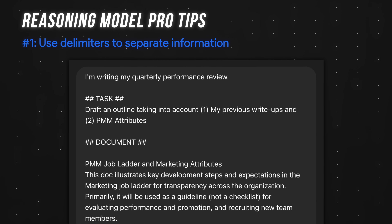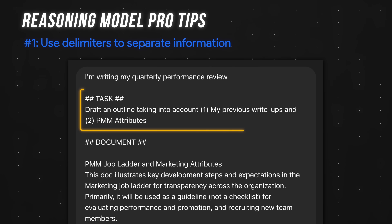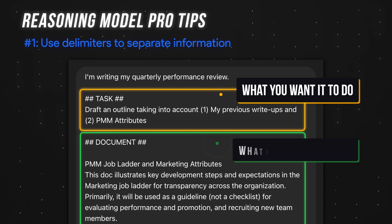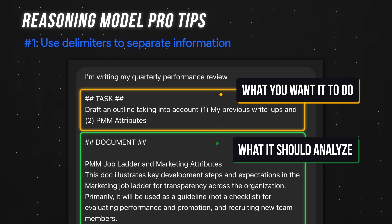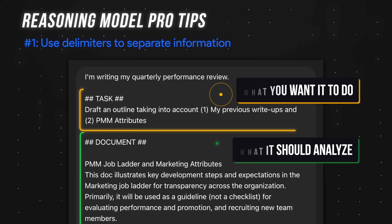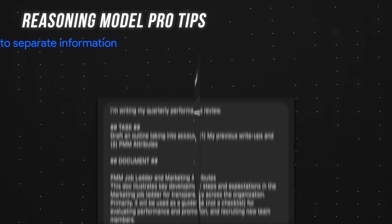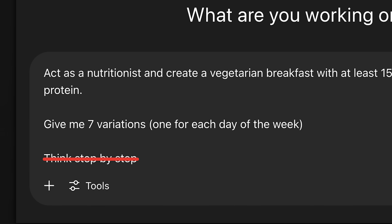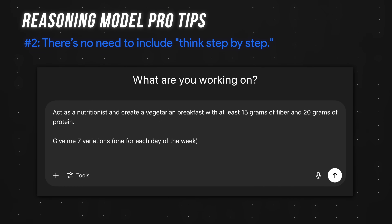Three pro tips for prompting reasoning models. First, use delimiters to separate information — for example, put your instructions under a task section and the content you want acted on under a document section. This helps a reasoning model differentiate between what you want it to do versus what it should analyze. Second, there's no need to include 'think step-by-step.' This phrase helps chat models but actually hurts the performance of reasoning models — they already think step-by-step without being told.